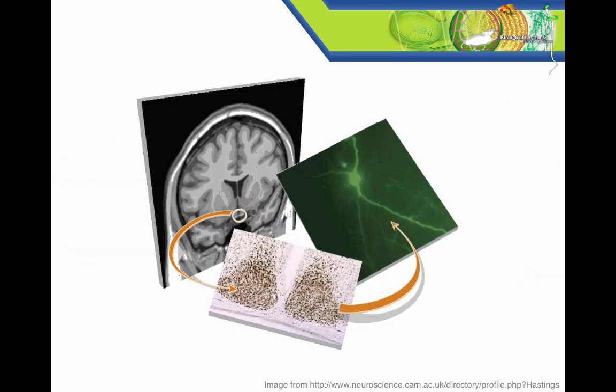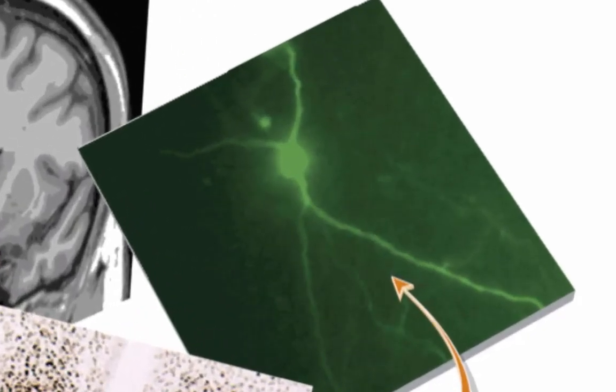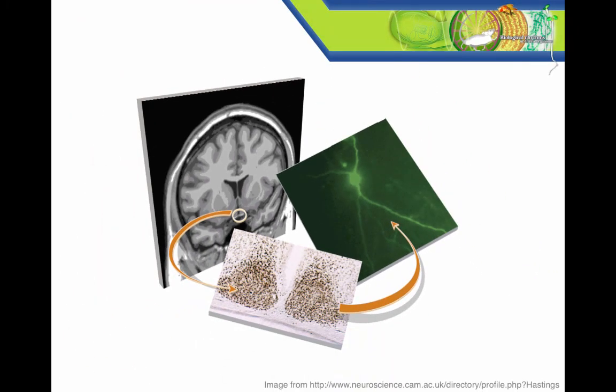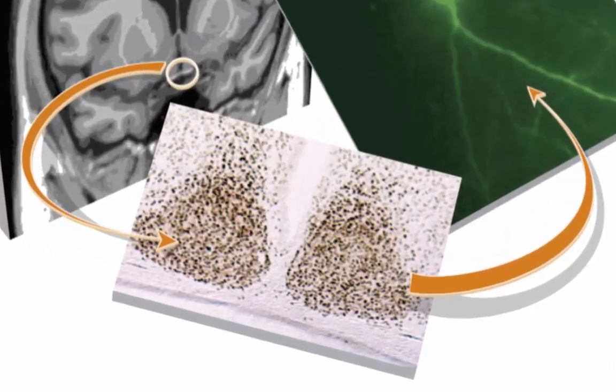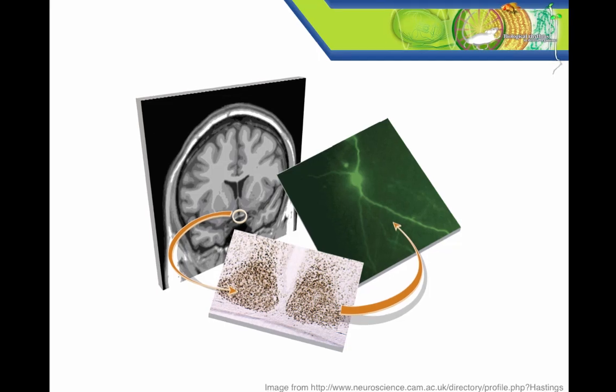So throughout this video, as you're introduced to the properties of cells in the brain and how we investigate them, think about circadian biologists and how they might apply these concepts and techniques to help them answer specific questions about how rhythms are generated in a neuron in the suprachiasmatic nucleus, or SCN, of the hypothalamus, which is the central pacemaker in mammals, and how that neuron communicates with other neurons in the SCN network to produce synchronized rhythms, and how that structure lies within the context of a whole, behaving organism.